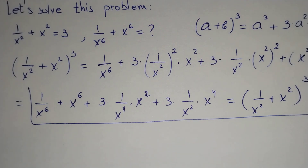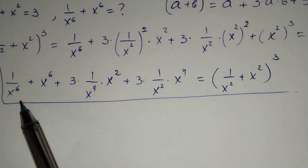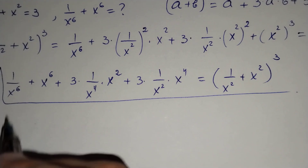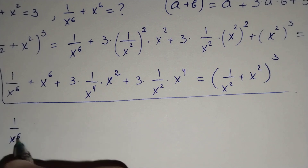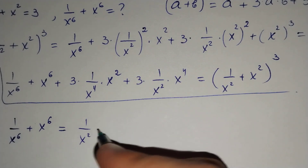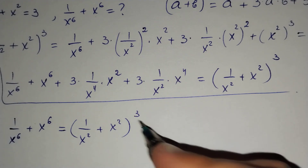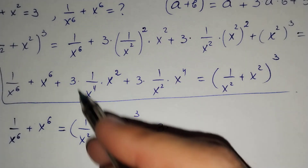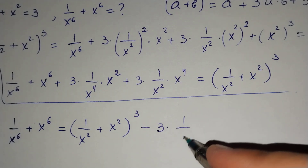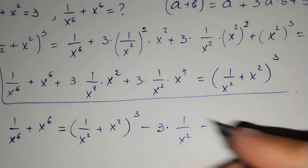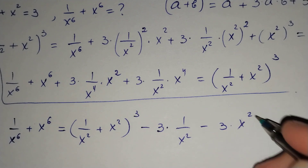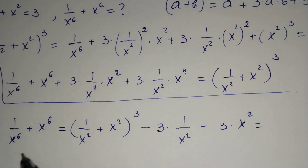From this equality we may find 1 over x to the power 6 plus x to the power 6. It equals (1 over x squared plus x squared) cubed, minus 3 times — if we simplify — 1 over x squared, minus 3 times x squared.